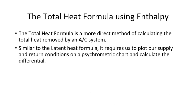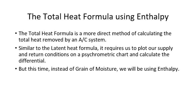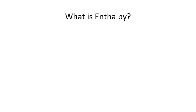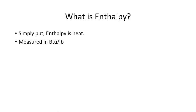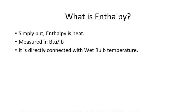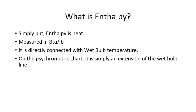Similar to the latent heat formula, it requires us to plot two points on the psychrometric chart, and then instead of calculating grains of moisture, we're actually going to be measuring and doing math to figure out what our enthalpy is. Simply put, enthalpy is the total heat in the air. Its unit of measurement is BTUs per pound of dry air, and is directly connected with wet bulb temperature — enthalpy takes into consideration the moisture level in the air. On the psychrometric chart, it's simply an extension of the wet bulb line.